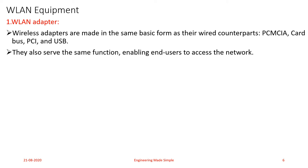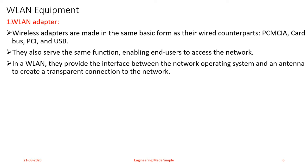Using a LAN card, a computer or workstation can connect to a wired LAN. Similarly, if a wireless LAN driver or adapter is installed on your PC, you can connect to an equivalent wireless local area network. In a wireless local area network, the wireless adapter provides the interface between the network operating system and an antenna to create a transparent connection to the network. The antenna distributes the network to different users, providing an interface through which one can connect to a wireless LAN.